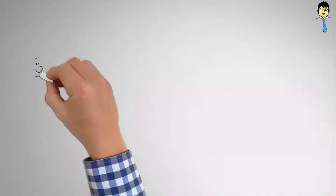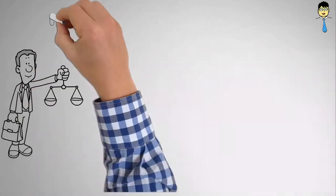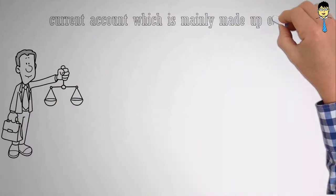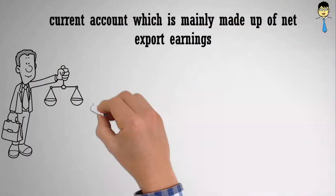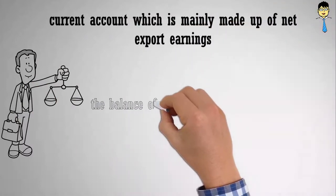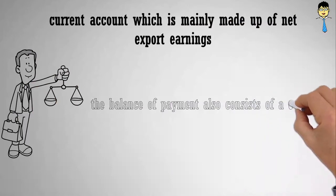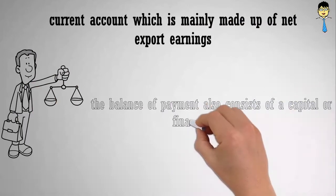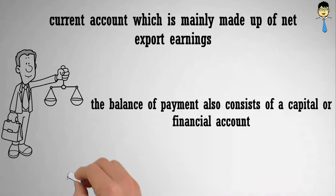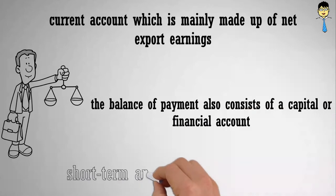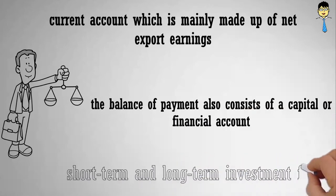Balance of Payments consists of a current account, which is mainly made up of net export earnings. In addition, the Balance of Payments also consists of a capital or financial account, which is mainly made up of short-term and long-term investment flows.